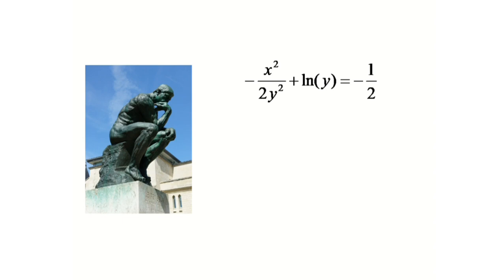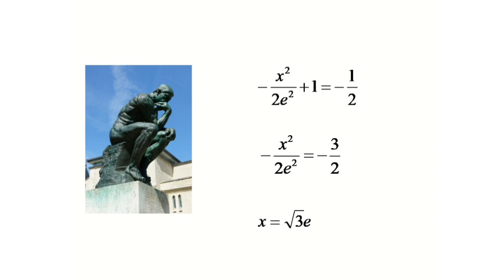And we have to find the value of x where y equals e. So if we put y equals e here, we will get minus x square by 2e square plus ln e equals minus half. And if we simplify it further, we will get x equals root 3 e and this is our answer.